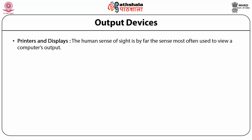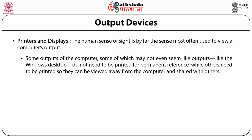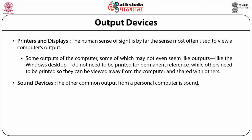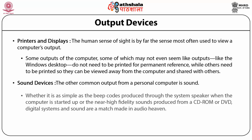The printer serves the human sense of sight, which is by far the most often used sense to view computer output. Text and graphics can be permanently placed on paper by the printer or viewed temporarily on the monitor. Some outputs, such as the Windows desktop, do not need to be printed for permanent reference, while others need to be printed to be viewed away from the computer and shared with others. The other common output from a personal computer is sound — whether a simple beep code produced through system speakers at startup, or high-fidelity sound produced from a CD-ROM or DVD. Digital systems and sound are a match made in audio heaven.